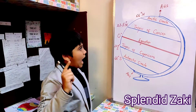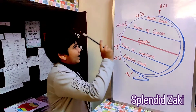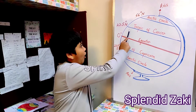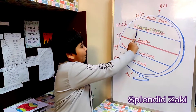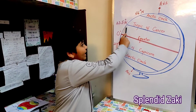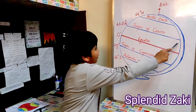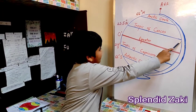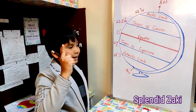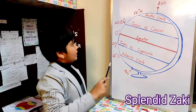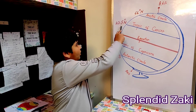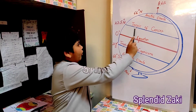And this is another imaginary line called the Tropic of Cancer. This is the Tropic of Cancer, also known as the Northern Tropic. It marks 23.5 degrees north on the globe.